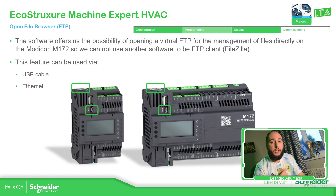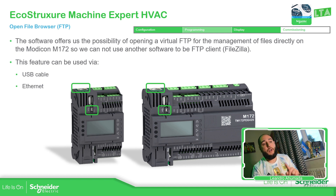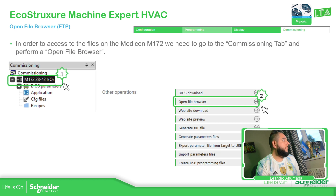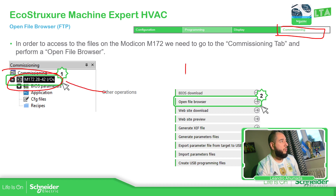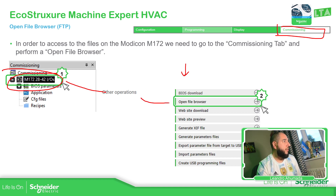If you're using an external FTP client, you will need to use the credentials — the username and password that you have for the controller. If you use the software tool inside Machine Expert HVAC, there is no need for that. What we need is to go first to Commissioning, then select the controller on the commissioning window, under Other Operations. We need to scroll down in the options and then we should be able to see the File Browser.